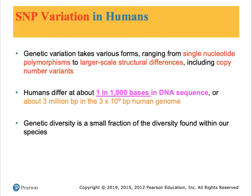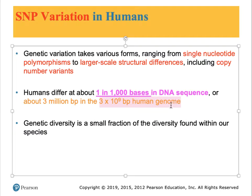Other polymorphisms may be larger, including a number of base additions or subtractions, including copy number variants, which we'll describe in future chapters. The assimilated data suggests that humans differ one base in every thousand on average across all our DNA. Since humans have three billion base pairs of DNA in a haploid genome, you and I would differ in three million base pairs across our single set of chromosomes. Differences between humans do not have to have a genetic basis — the vast majority of human diversity has to do with the environment or the way genetic information is manifested.